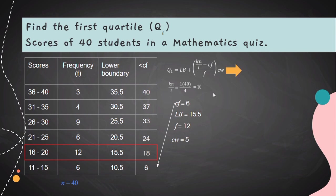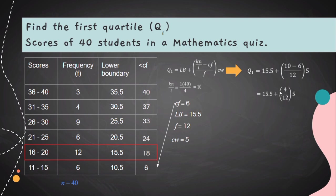Now we substitute into the formula. Q1 equals 15.5 plus open parenthesis 10 minus 6 over 12 close parenthesis times 5. First, 10 minus 6 equals 4. So we have 15.5 plus open parenthesis 4 over 12 close parenthesis times 5. Computing 4 over 12 times 5 gives 1.67. Therefore 15.5 plus 1.67 equals 17.17. So our Q1 is 17.17.